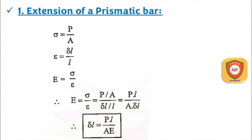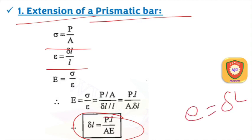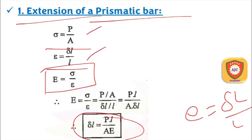We need to talk about the extension of the prismatic bar. The formula is δl = PL/AE. Stress is P divided by area, and strain is δl divided by l — change in dimension divided by original dimension. So strain equals sigma divided by E, giving us δl = PL/AE as the prismatic bar elongation formula.